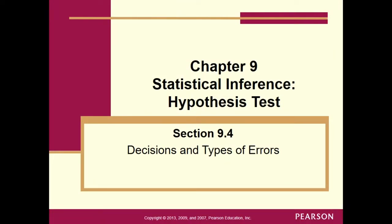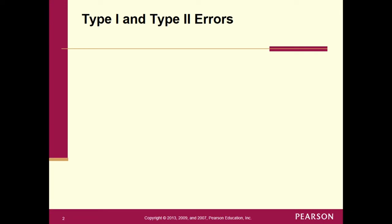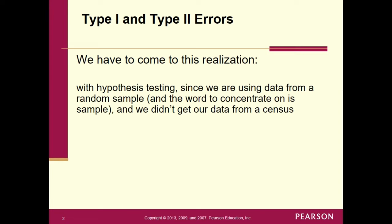Hello stat students, today we are going to go over section 9.4 on decisions and types of errors. We have what's called Type 1 and Type 2 errors, and we have to come to a realization. With hypothesis testing, since we are using data from a random sample, the key word to concentrate on isn't the random part — it's the sample.